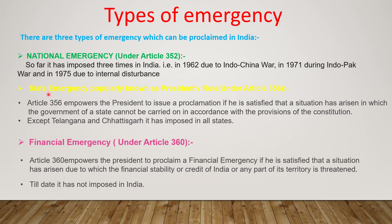The second type of emergency is state emergency, which is popularly known as President's Rule under Article 356. Article 356 empowers the President to issue a proclamation if he is satisfied that a situation has arisen in which the government of a state cannot be carried on in accordance with the provisions of the Constitution. Except Telangana and Chhattisgarh, it has been imposed in all states. The third type is financial emergency under Article 366. Article 366 empowers the President to proclaim a financial emergency if he is satisfied that the financial stability or credit of India or any part of its territory is threatened. Till date, it has not been imposed in India.